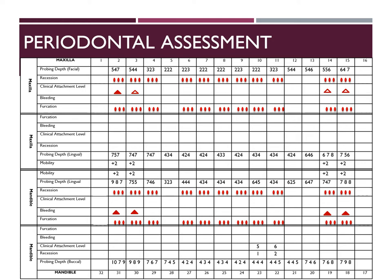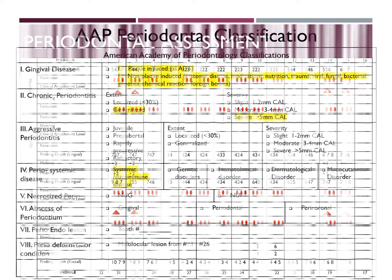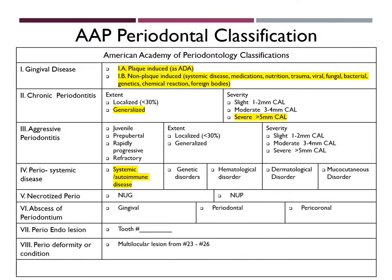As you can see on the probing depths, even in the anterior, the probing readings are very high. For AAP periodontal classification, I chose 1a plaque-induced and 1b non-plaque-induced gingival disease. I chose these two because plaque-induced would relate to his spinal cord injury, in which he has limited ability to remove plaque from his teeth.